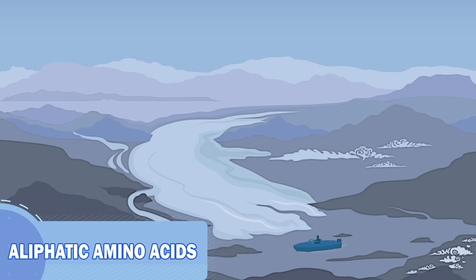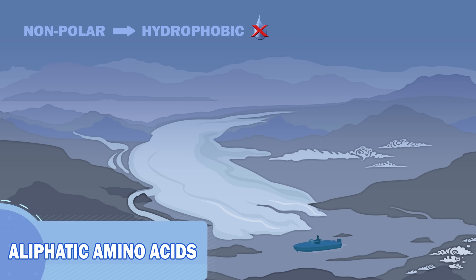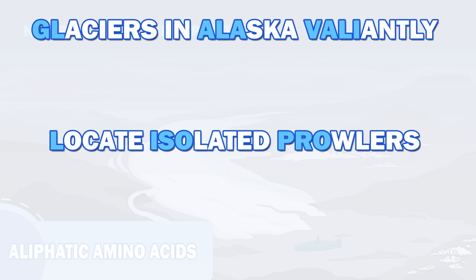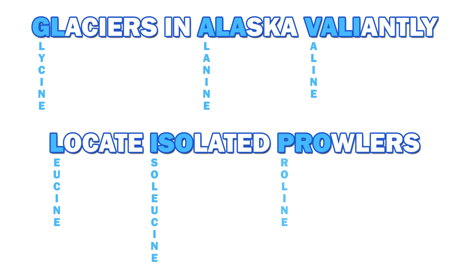Aliphatic amino acids are nonpolar and therefore hydrophobic. A simple mnemonic to remember the six aliphatic amino acids is: glaciers in Alaska valiantly locate isolated prowlers — standing for glycine, alanine, valine, leucine, isoleucine, and proline.